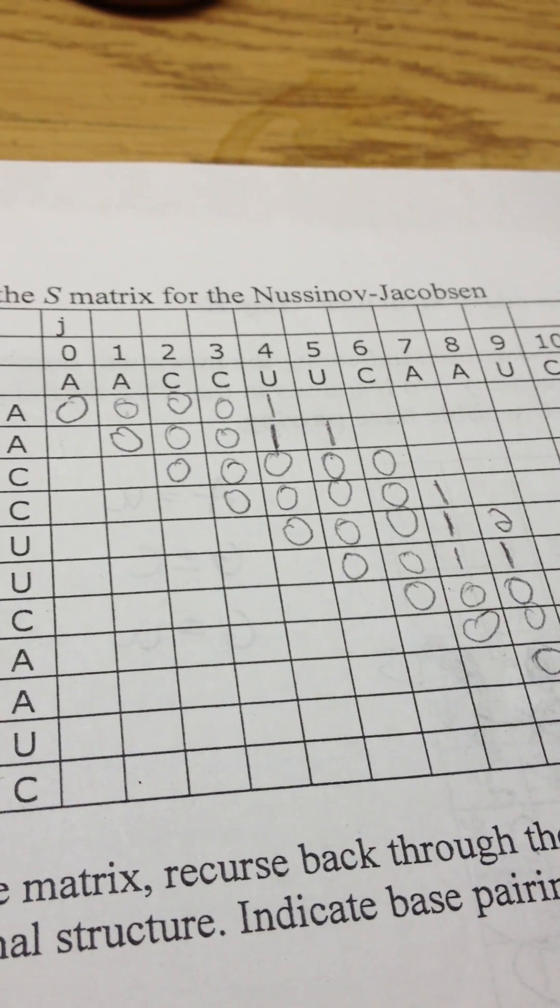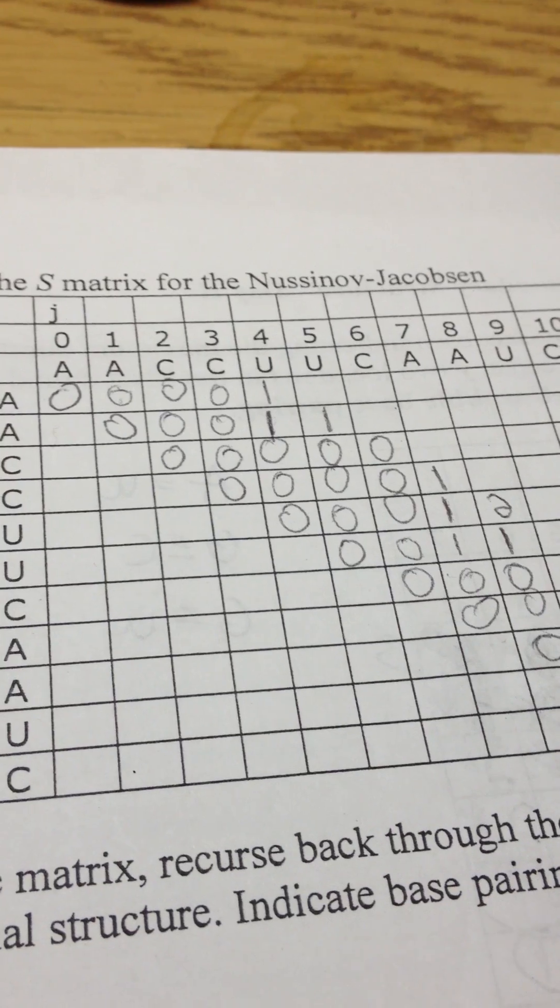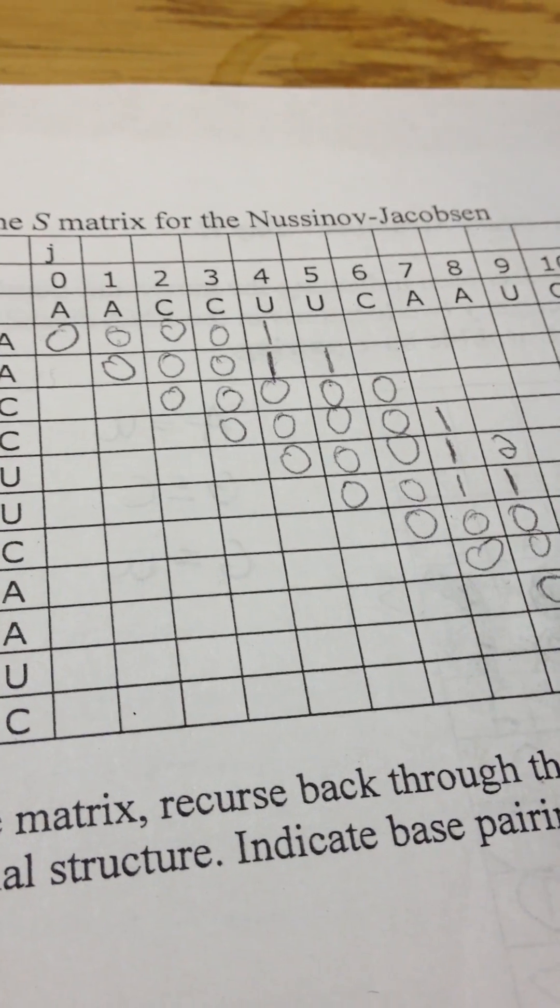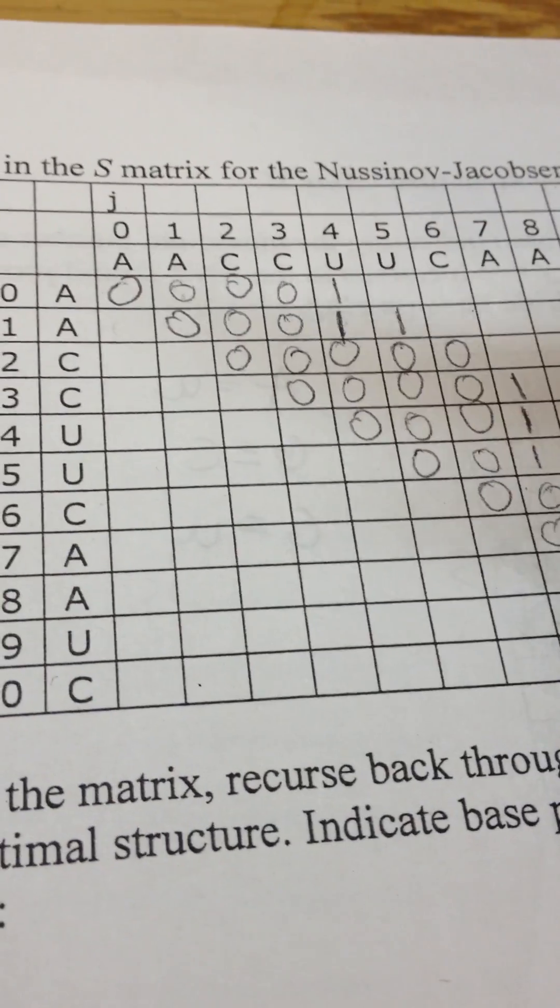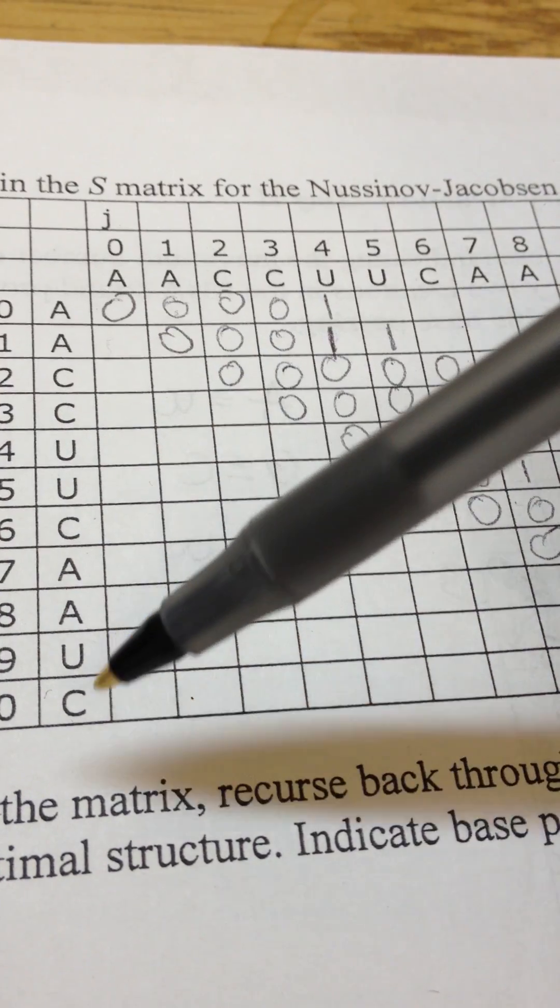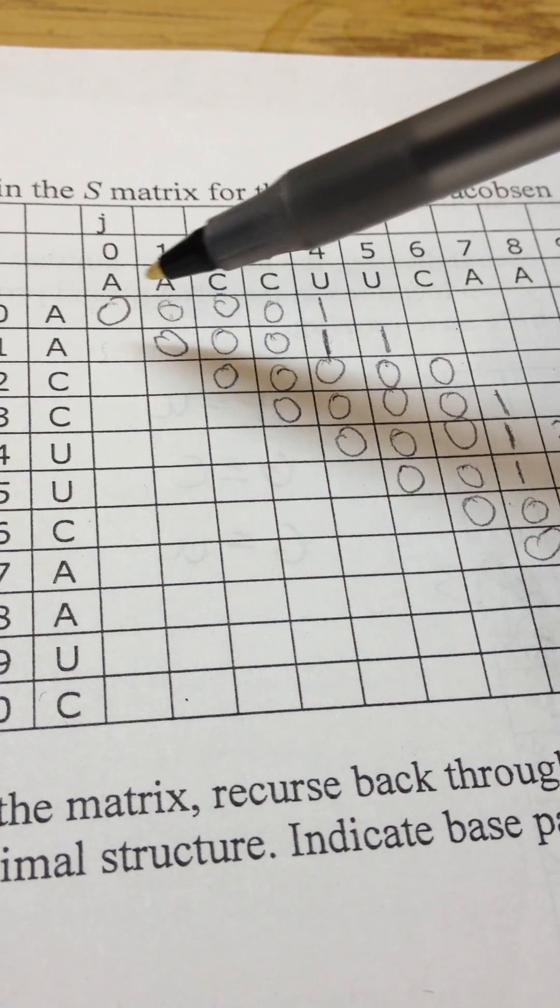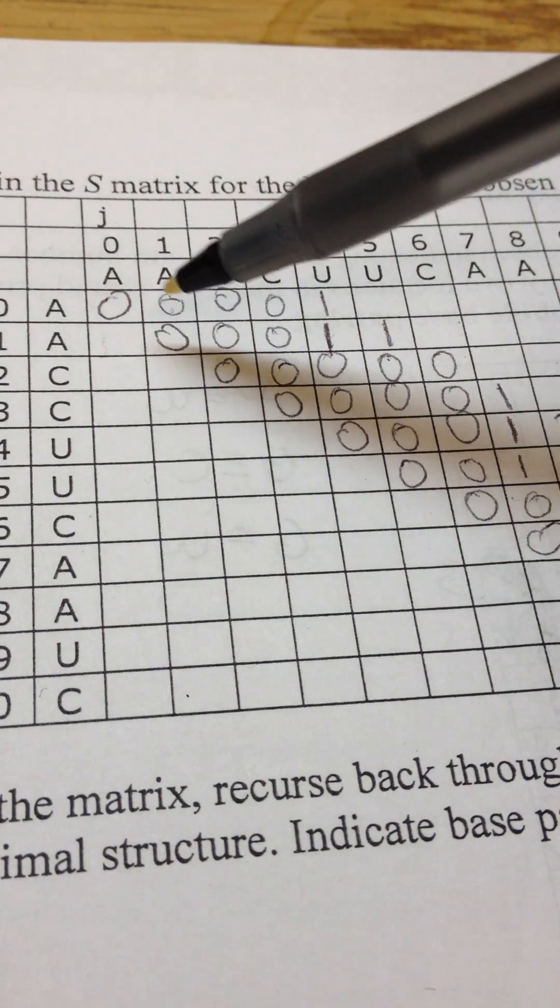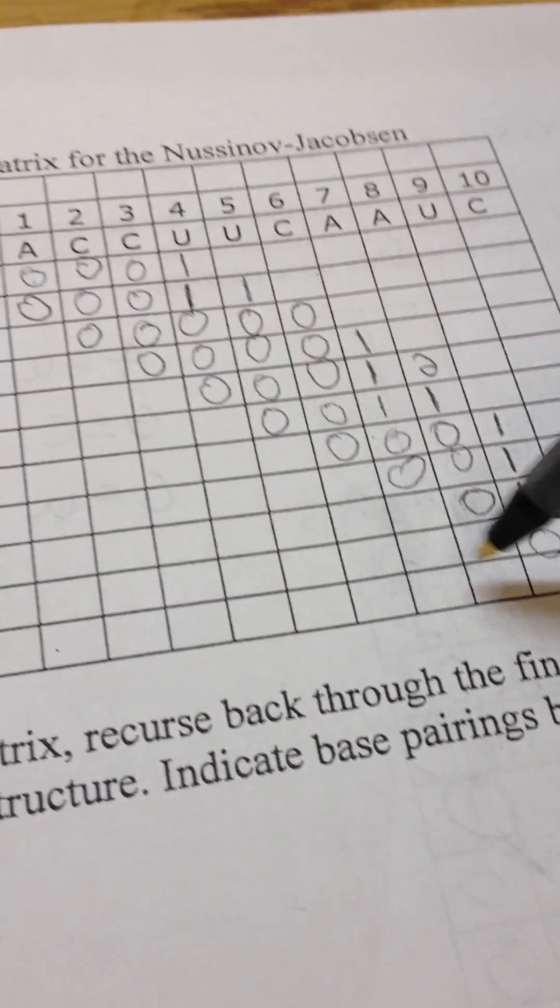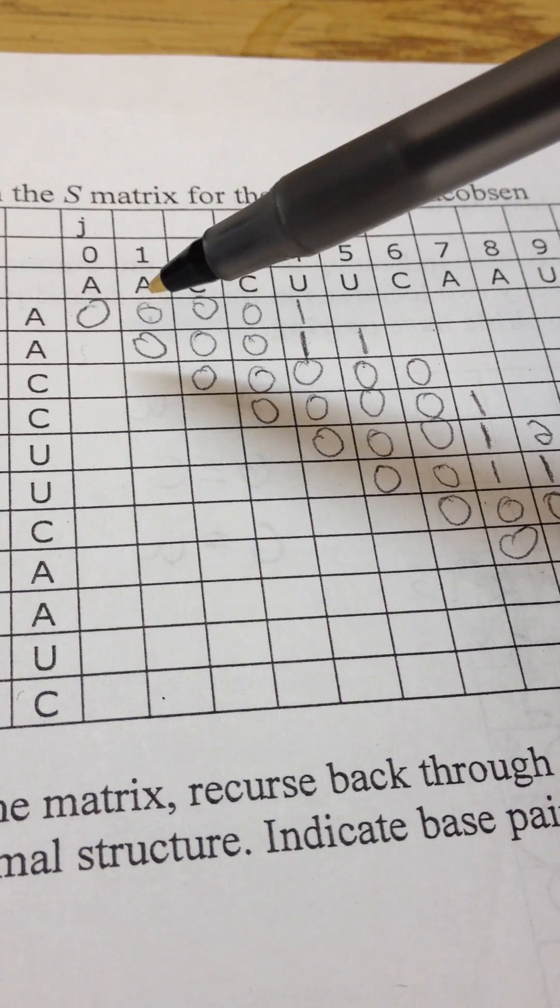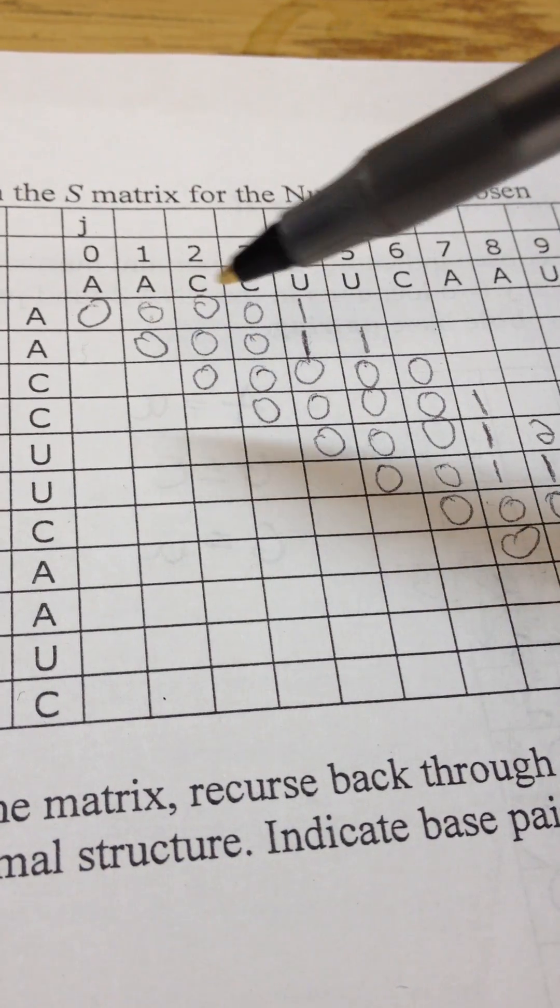Alright, so tonight we're going to be doing an S-matrix of Nussinov and Jacobsen. As you can see, some of it's already done just to help us with time. So right here on the left and top columns, we have the mRNA nucleotides aligned accordingly, and that's why we have zeros all along the diagonal. This is because A to A cannot match up, so we add zero, and the same thing with the whole diagonal.